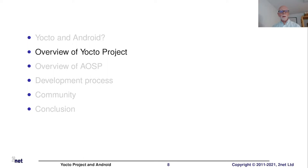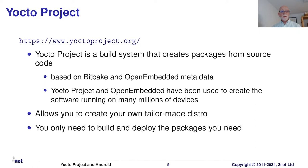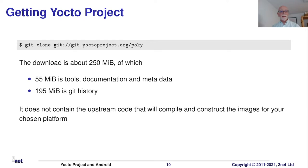Yocto Project is, as they say on their website, not an embedded Linux distribution — but it can build one for you. It is based on the BitBake build tool, OpenEmbedded, and Yocto Project-specific metadata, which together can produce operating systems of a wide range of capabilities. To get a copy, you use the git clone command shown on the slide. You'll get roughly 55 megabytes of tools, documentation, and metadata, plus quite a lot of git history. It's small because you only have the tools and metadata — not the actual source code, which comes along later.